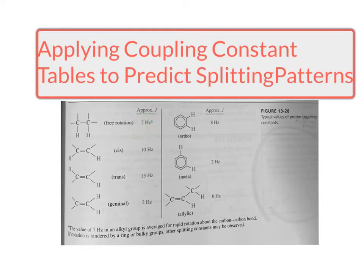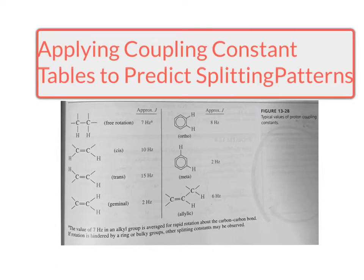We can use these J values as ways of assessing what the structure of a molecule is. For example, if we had a hypothesis that two protons were trans to one another relative to the alkene versus the hypothesis that they were cis, we could look at the coupling constants to determine the configuration — because we would expect one to show 10 Hertz versus the other measured at more like 15 Hertz.